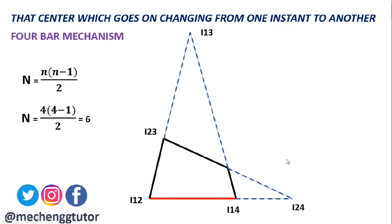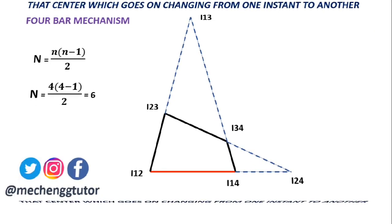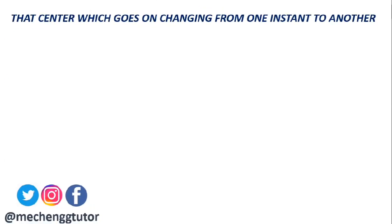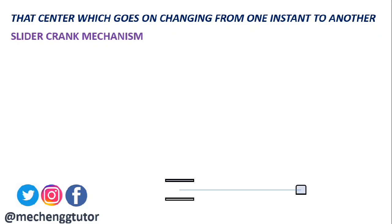Similarly, we now determine the instantaneous centers for the slider crank mechanism. We construct the mechanism starting with a horizontal line and locating the fixed link, the pivot, and the cylinder in which the piston slides. Then we add the crank, the connecting rod, and ultimately the piston, which together comprise the slider crank mechanism.